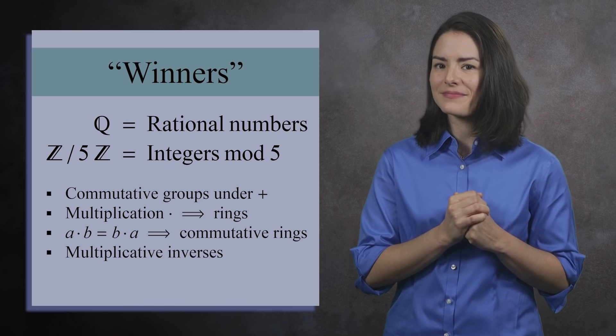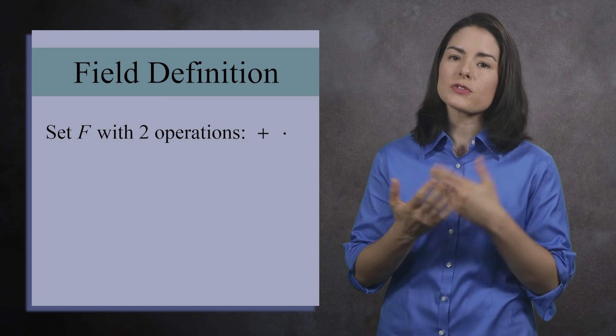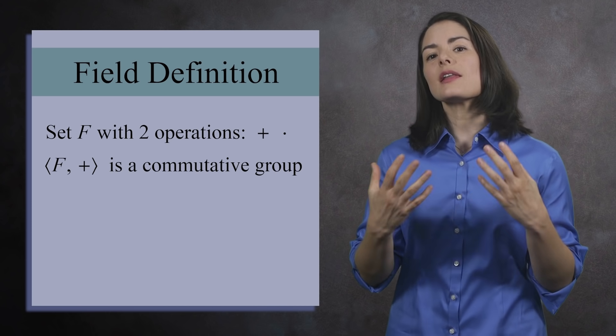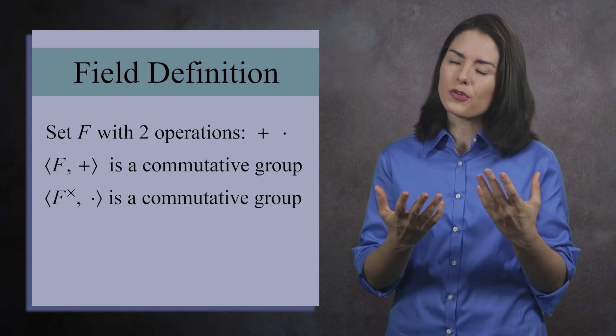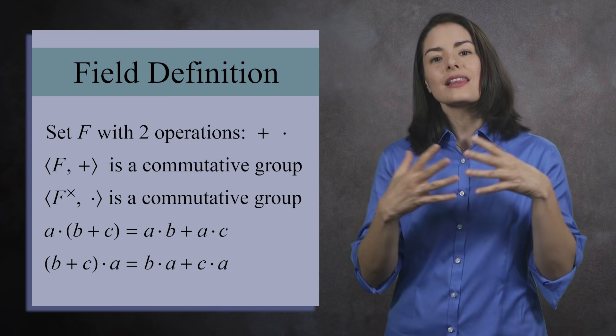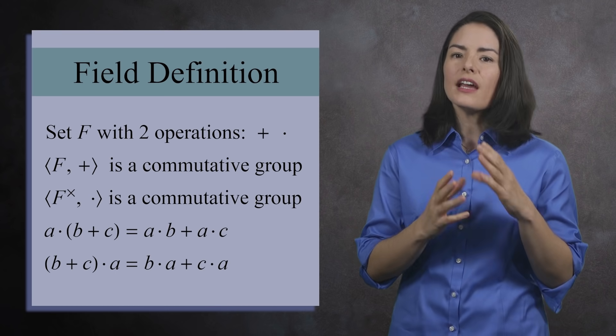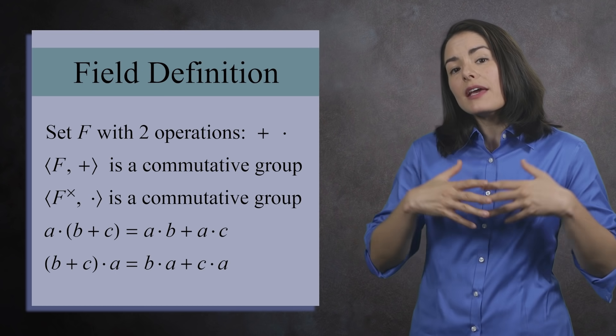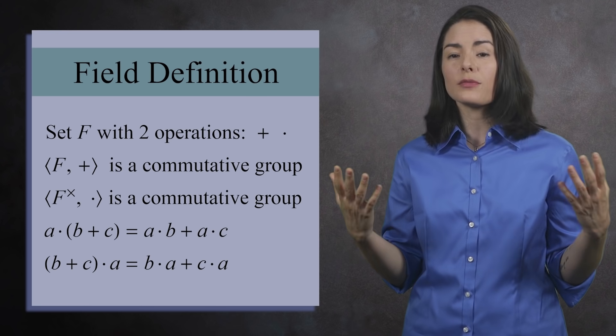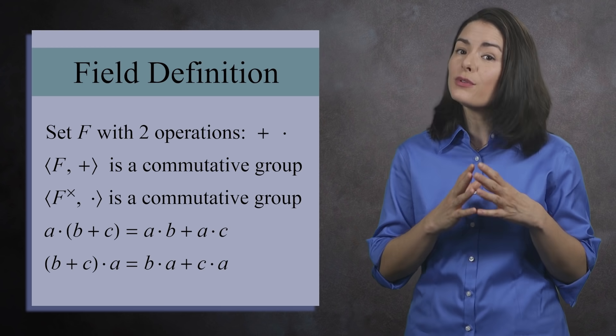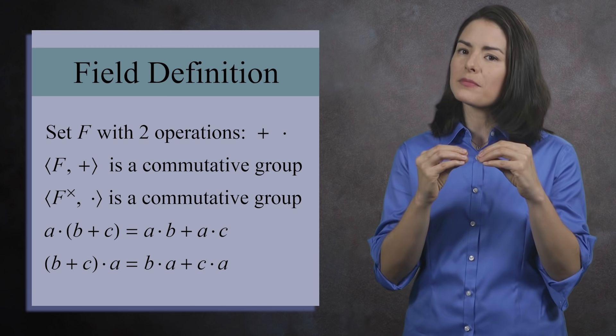A field is a set of elements F with two operations, addition and multiplication. Under addition, the elements are a commutative group. Under multiplication, the non-zero elements are a commutative group. Also, addition and multiplication are linked by the distributive property. This is the compact definition of a field. If you wanted, you could define a field and make no mention of groups whatsoever. You could just give a complete list of all the properties a field must satisfy. This is fine, but you do lose sight of the fact that a field is actually two groups with two operations at the same time.